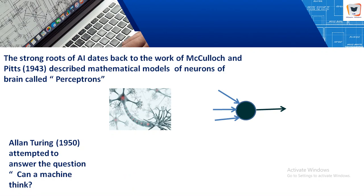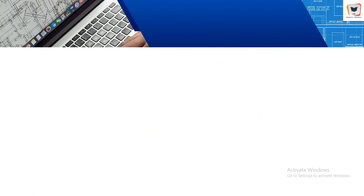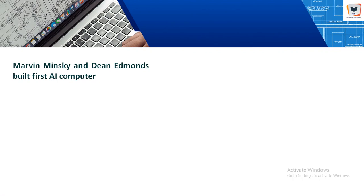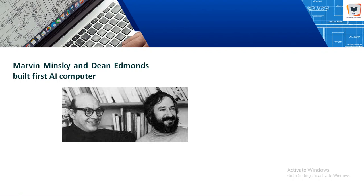Shortly after this, Marvin Minsky and Dean Edmonds built what could be described as the first AI computer, based on the network of neuron models of McCulloch and Pitts. At the same time, Claude Shannon considered the possibility of a computer playing chess and the type of strategies needed to decide which move to make next.